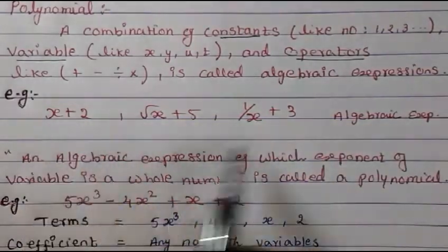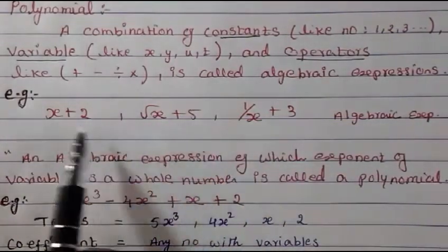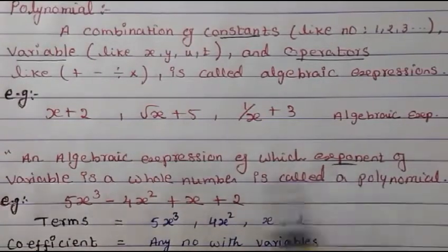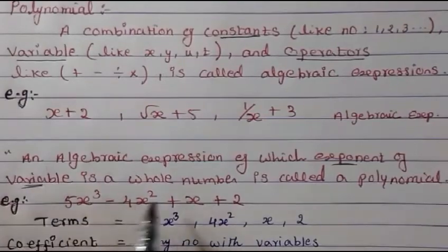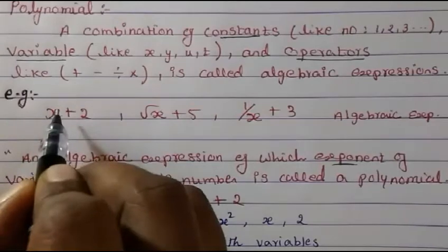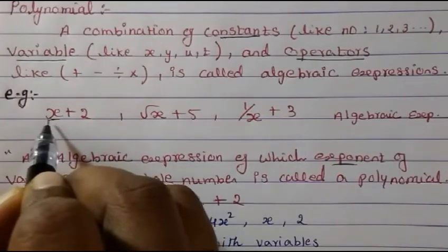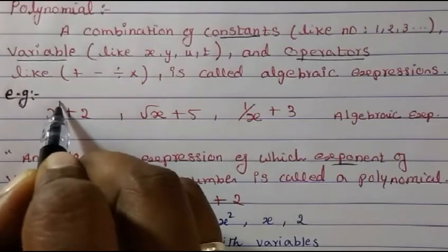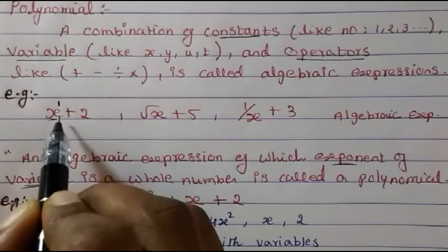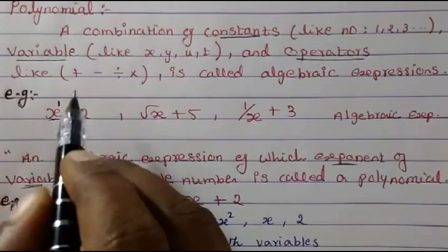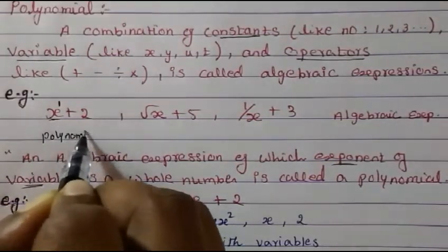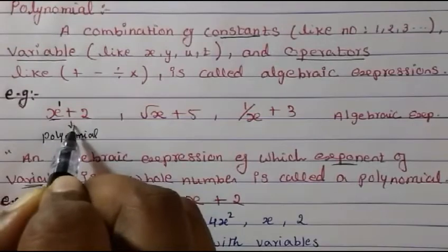Let's check each expression. We have to see the exponent of the variable — whether it is a whole number or not. In the first expression, the variable is x and the exponent is 1. Since 1 is a whole number, therefore this is a polynomial.